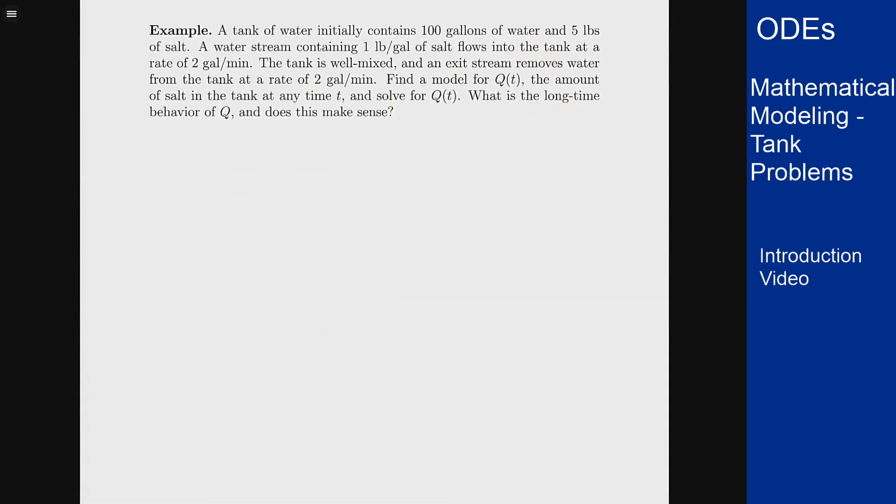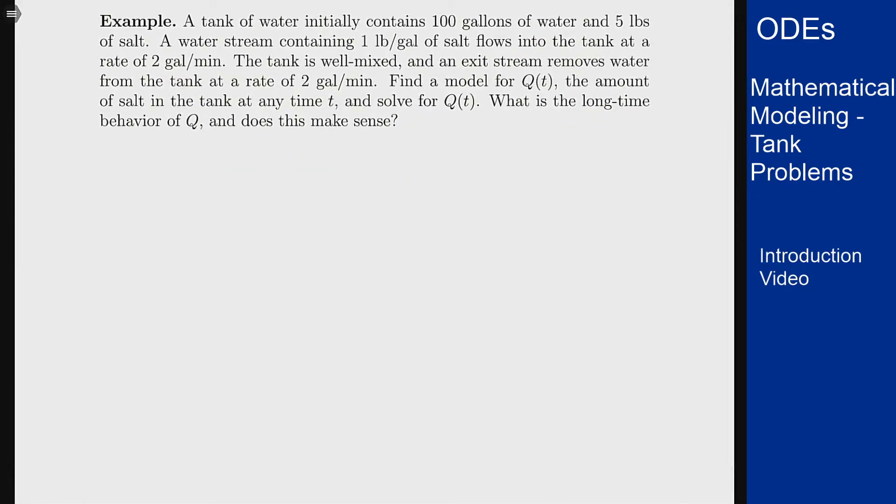Example: A tank of water initially contains 100 gallons of water and 5 pounds of salt. A stream containing 1 pound per gallon of salt flows into the tank at a rate of 2 gallons per minute. The tank is well mixed. Exit stream removes water from the tank at a rate of 2 gallons per minute. Find a model for Q(t), the amount of salt in the tank at any time t, and solve for Q(t). What's the long-time behavior? Does this make sense?